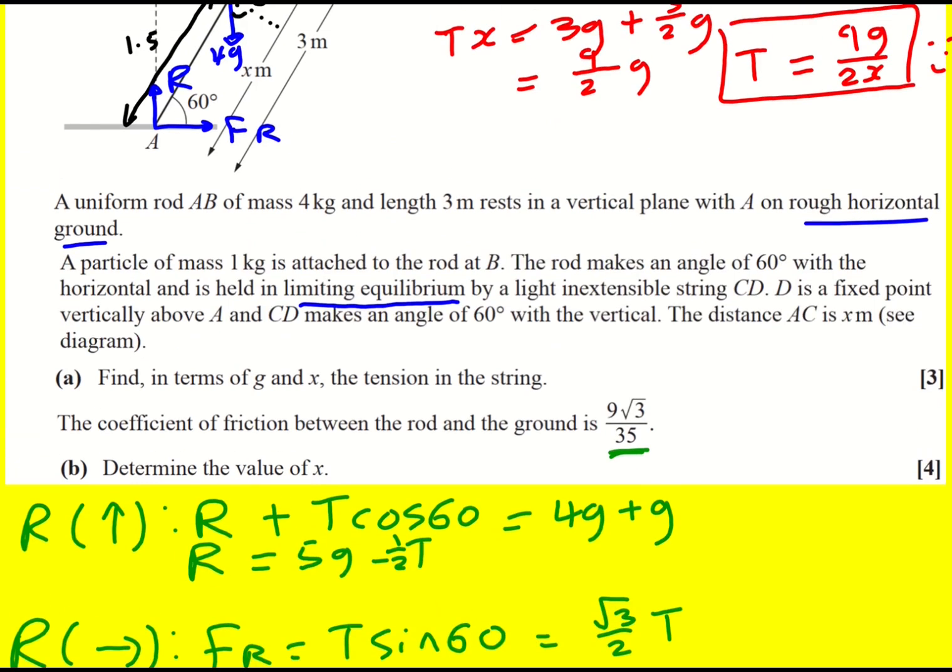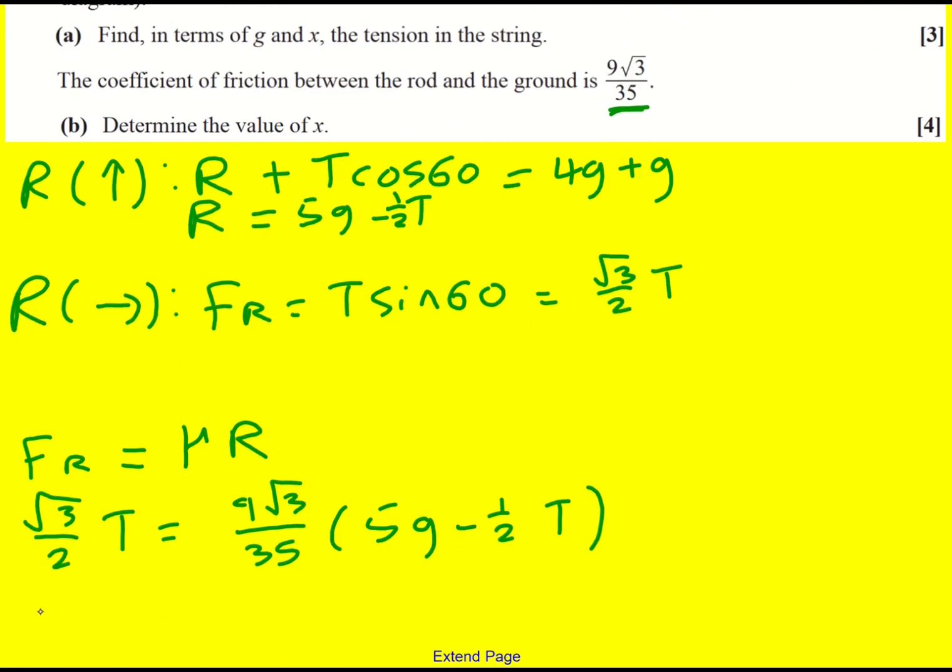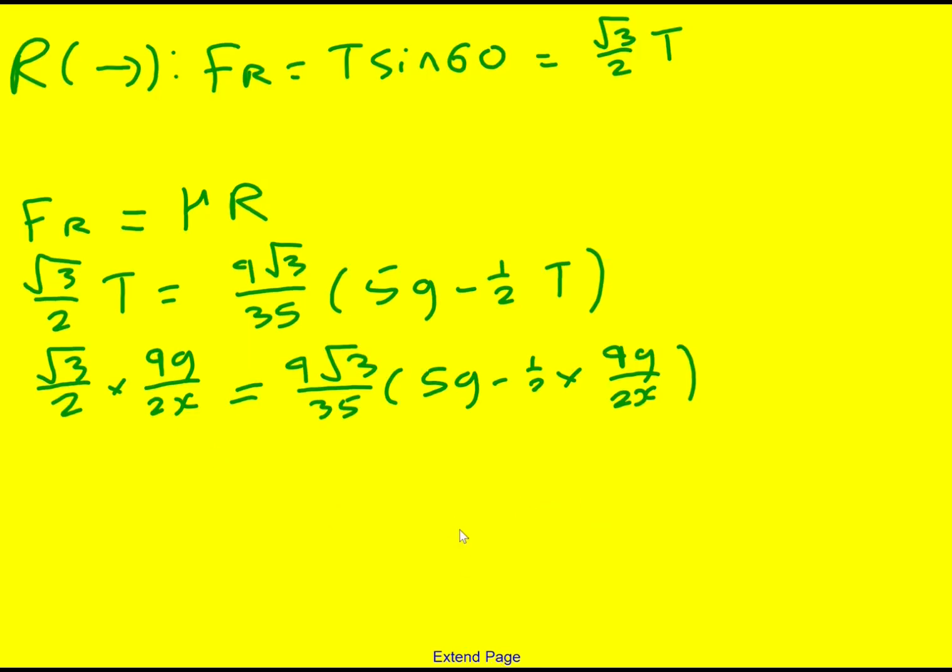So at this point I'm going to bring that back in. 9G over 2X. So root 3 over 2 times 9G over 2X is going to equal 9 root 3 over 35 times 5G minus a half times 9G over 2X. This does not look nice, does it?